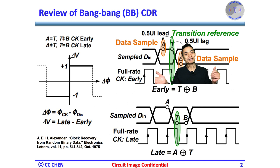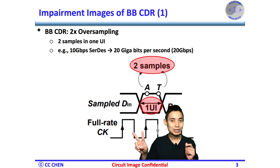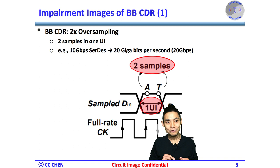After checking all the Bang-Bang CDR waveform images, think about the Bang-Bang CDR impairment. The Bang-Bang CDR requires two samples in one unit interval: one for the data sample and the other for the transition sample.